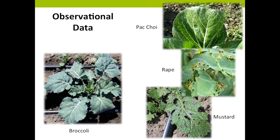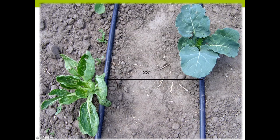Here are some of the observational data from throughout the season. Our diverse trap crops — bok choy, rape, and mustard — are just covered in flea beetle damage. And here is our broccoli, the target crop, with little to no damage. Just to show how close they are: here is our bok choy, one of our diverse trap crops, covered in flea beetle damage, with our target crop broccoli only 23 inches away with little to no damage.